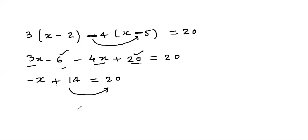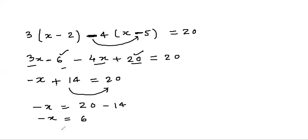So -x = 20 - 14, and 20 - 14 is 6, giving -x = 6. In the answer we never write a minus sign before x, so we shift this sign to the RHS, giving x = -6.